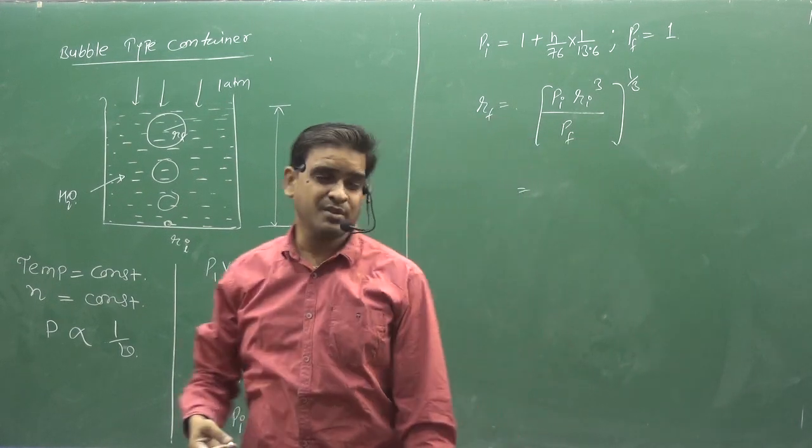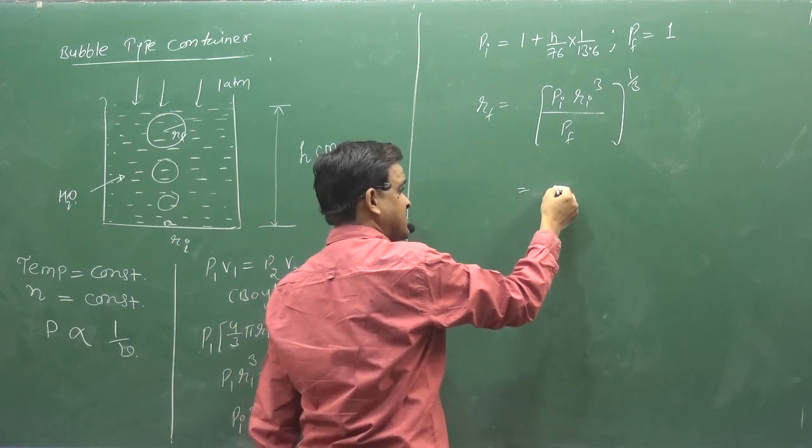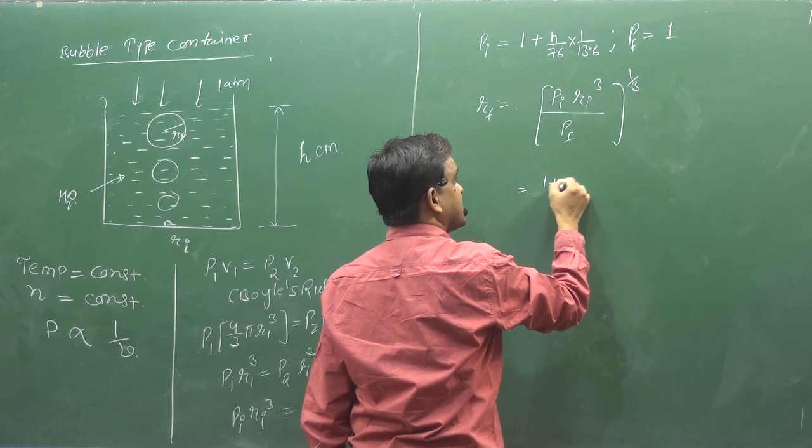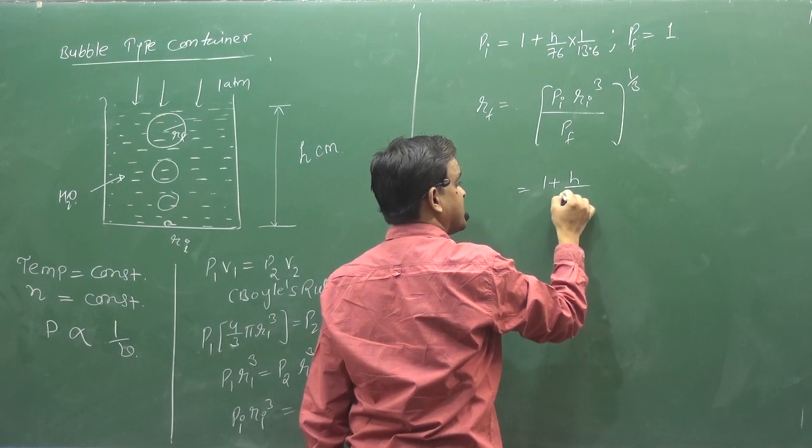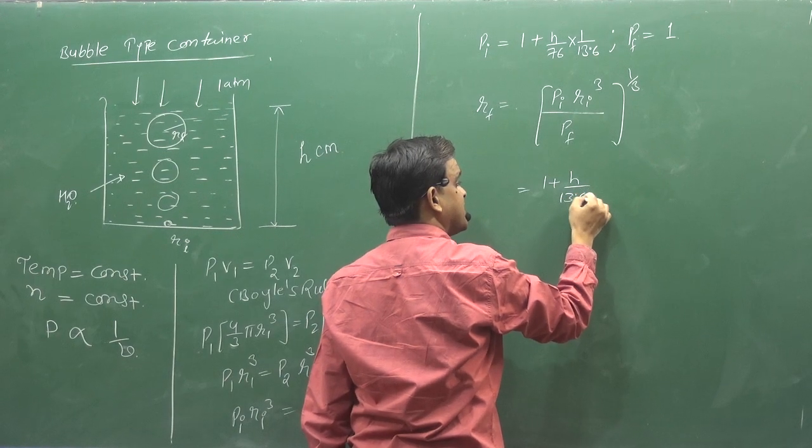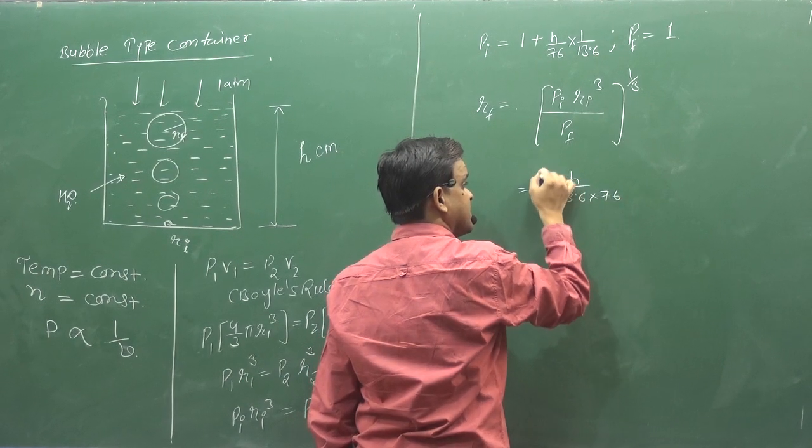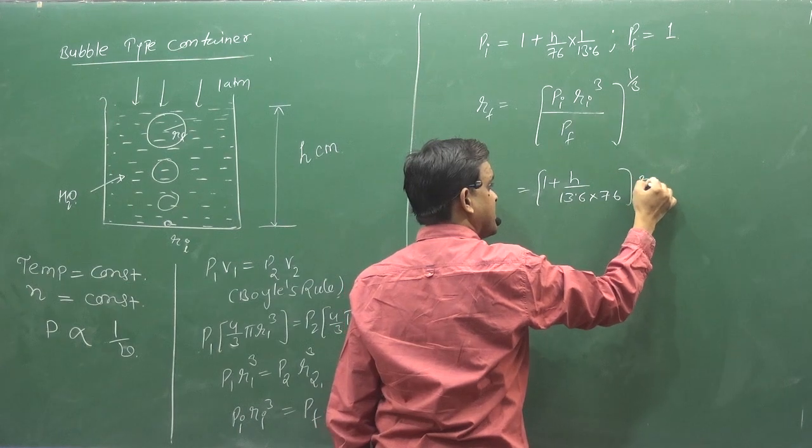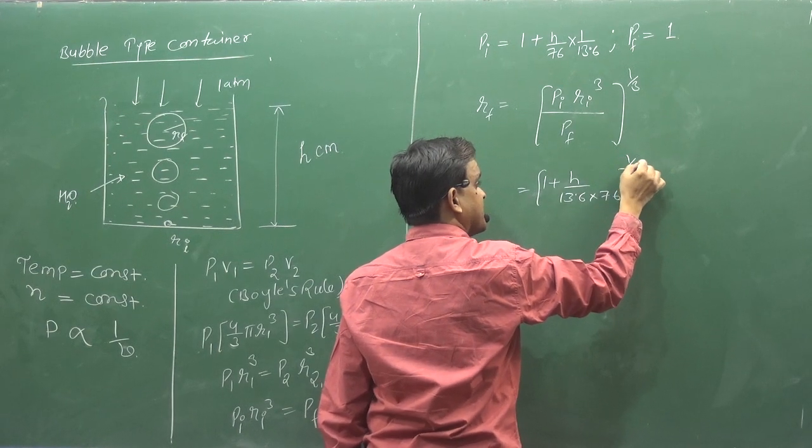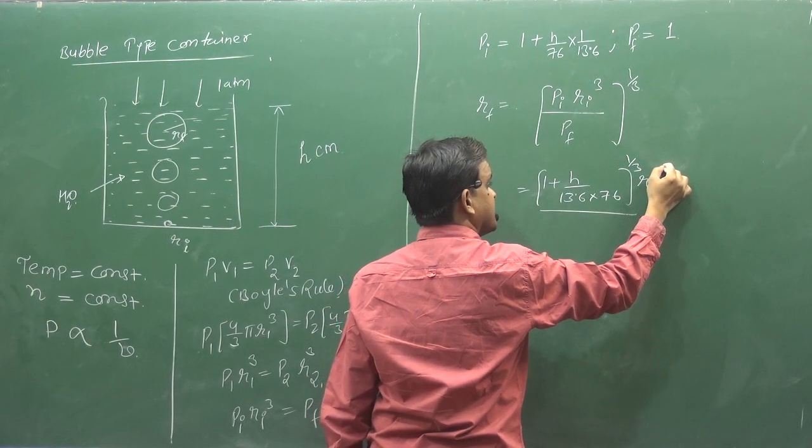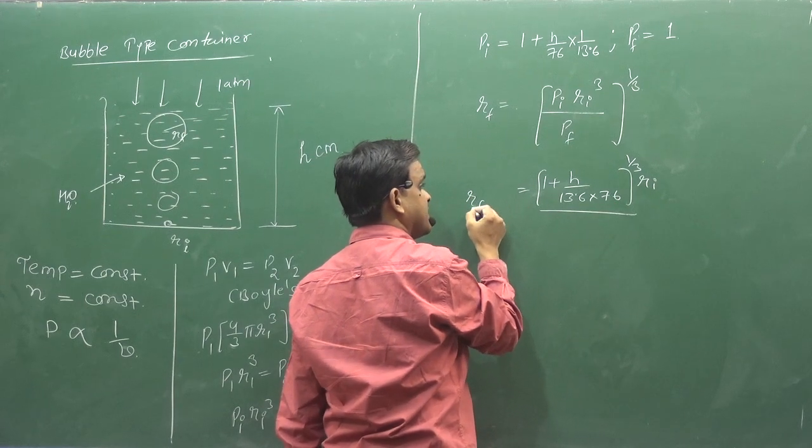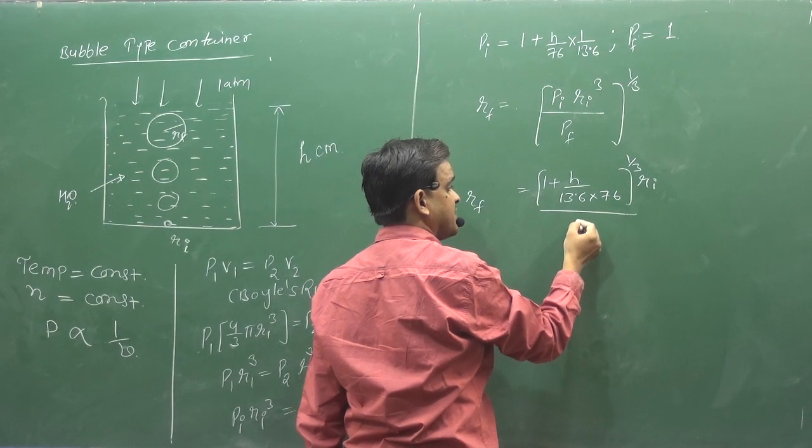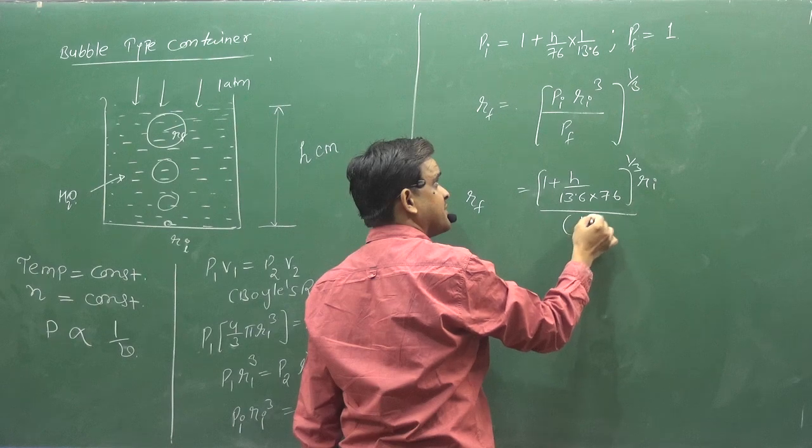You can tell the final radius easily. Or where do you know ratio? P initial value is going to be fine. 1 plus H upon 13.6 multiply by 76. R I value I will give you. Here 1 by 3. Here 1 will come. R final will come. And what is P final? 180. So 180 is what you have.